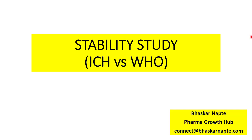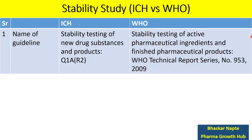Let us take a look at differences between ICH and WHO, i.e., World Health Organization Stability Guidelines. ICH has published its guideline about stability study, i.e., Stability Testing of New Drug Substances and Products, and the number of this guideline is Q1AR2. Whereas WHO's guideline about stability testing is Stability Testing of Active Pharmaceutical Ingredients and Finished Products, WHO Technical Report Series No. 953-2009.